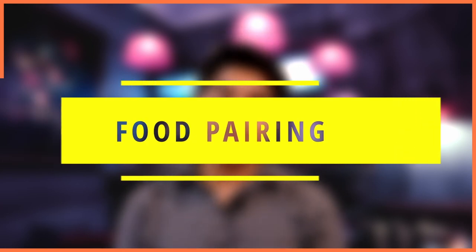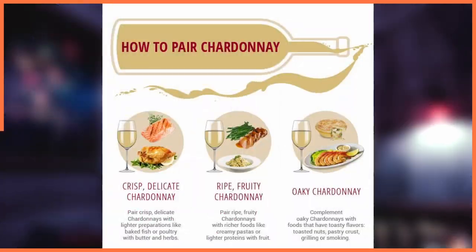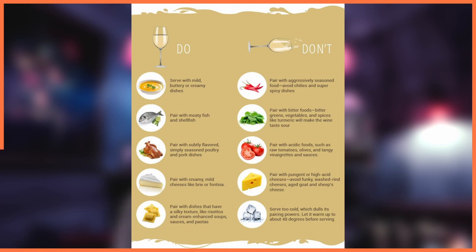Chardonnay is a very adaptable grape, so food pairing totally depends on the region, climatic conditions, and winemaking techniques used. It goes with a variety of foods like seafood, and you can also pair it with grilled meats and poultry like chicken — it goes really well with chicken.